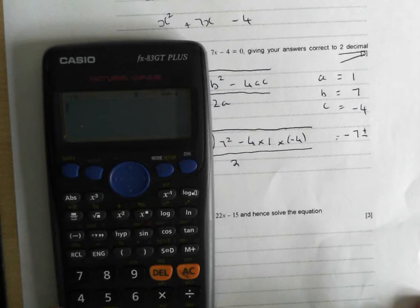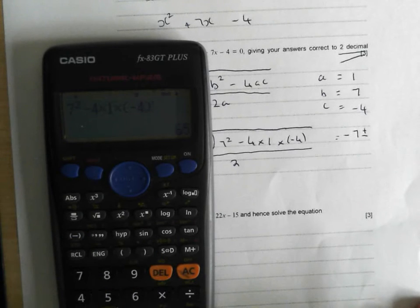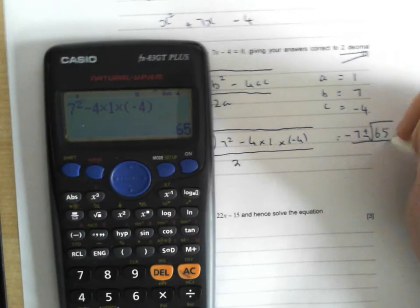So I'm going to work out my square root. So 7 squared minus 4 times 1 times brackets minus 4, close my brackets, 65. Phew! That would have been embarrassing. Square root all over 2.